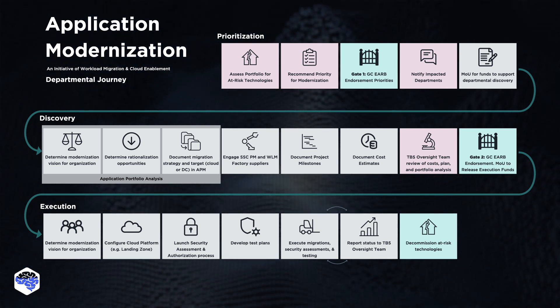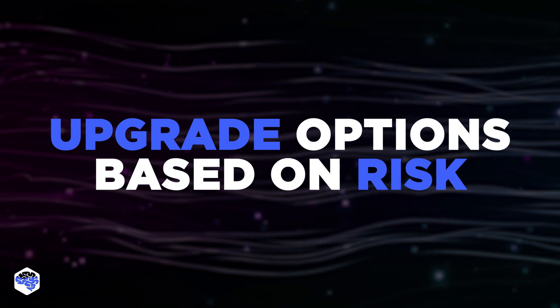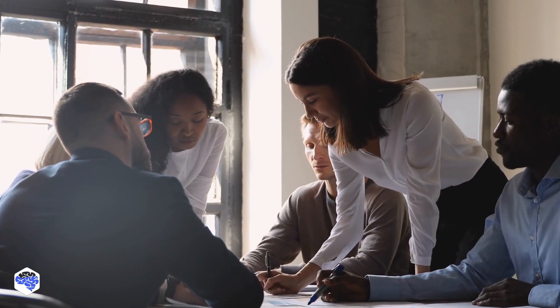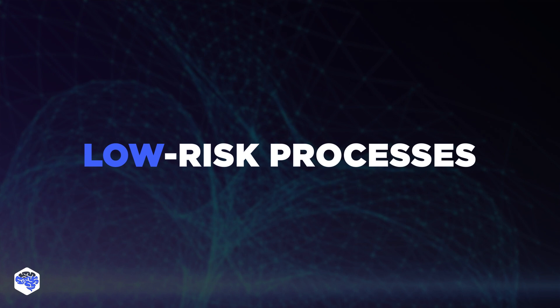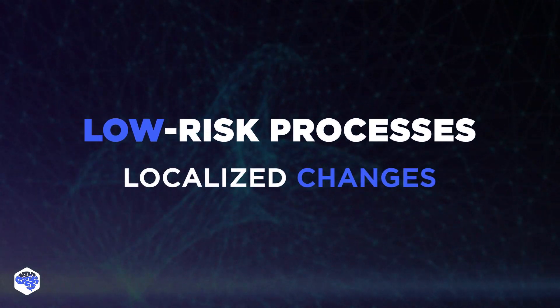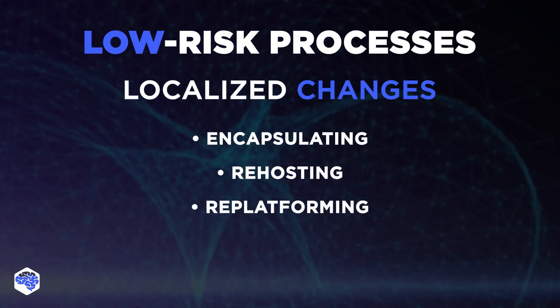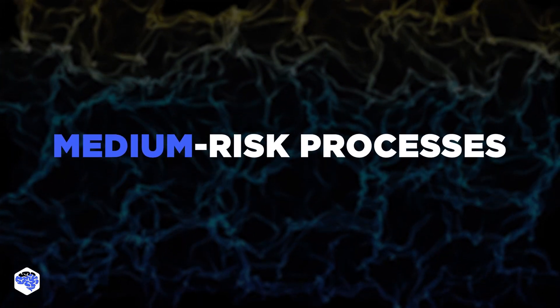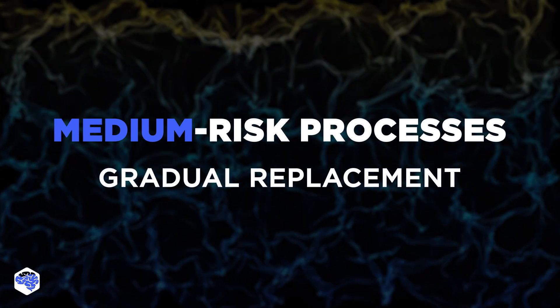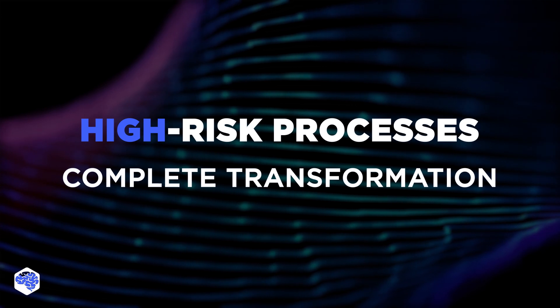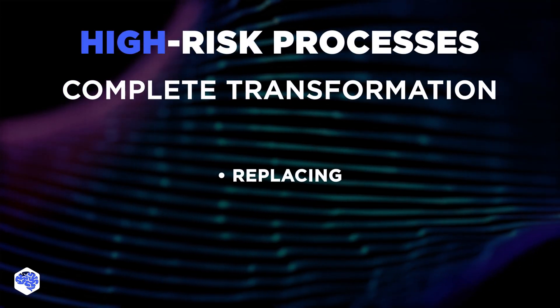Finally, we decommission at-risk technologies. Let's take a look at legacy systems upgrade options based on risk. There are several strategies for upgrading legacy systems, listed in order of increasing complexity and cost. Low-risk processes mean localized changes and improvements to the existing system, and include encapsulating, re-hosting, and re-platforming. Medium-risk processes mean gradual replacement or refurbishment, and include refactoring and re-architecting. High-risk processes mean complete transformation or replacement, which can be done via replacing and rebuilding.